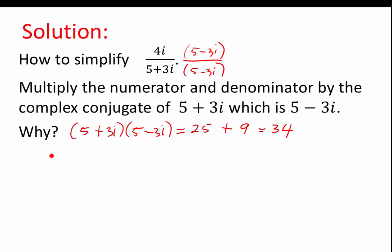So what we're going to do is we rewrite this now as 4i times 5 minus 3i, whole thing divided by 34, because we've already simplified the denominator. And this is just multiplying 4i through the difference. So we've got 4i times 5 is 20i, and then negative 12i squared, because you've got 4i times negative 3i, which gives us negative 12i squared, divided by 34.